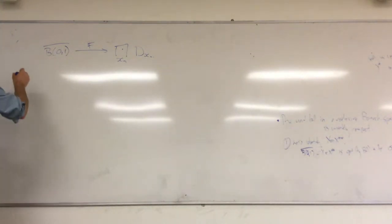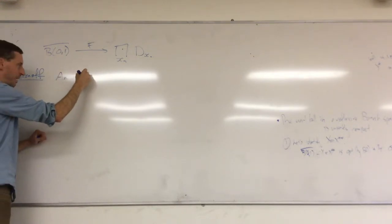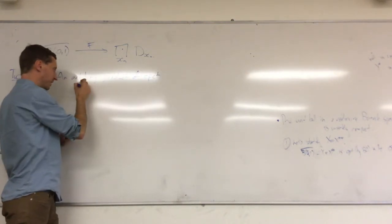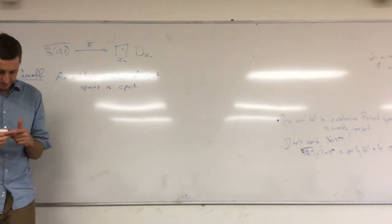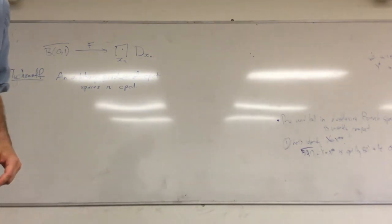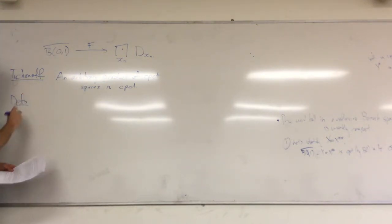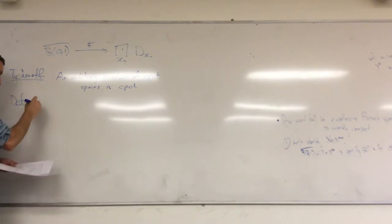The first thing we need is Tychonoff's theorem, which states that an arbitrary product of compact spaces is compact. This is presumably not something you discussed any other time you've seen point-set topology. It's easiest to understand this if you switch to a slightly different but equivalent notion of compactness.